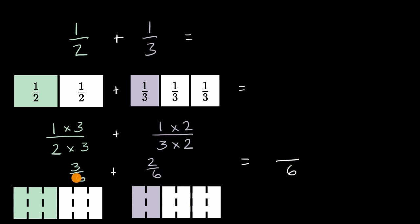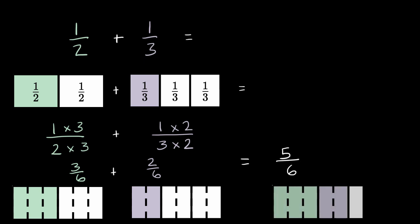Well, it's going to be a certain number of sixths. If I have three of something plus two of that something, well, it's going to be five of that something. And in this case, the something is sixths. So it's going to be five sixths.